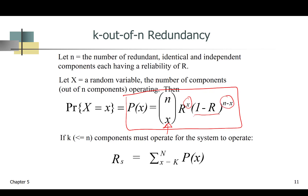If k components must operate for the system to operate, that means we need at least k components working so that the system doesn't fail. Then the reliability of that system is given by the summation of all the probabilities of x, where x goes from k to n.